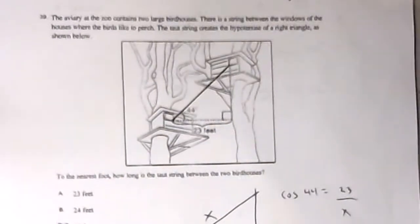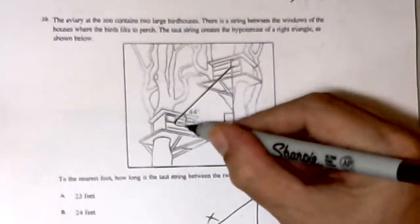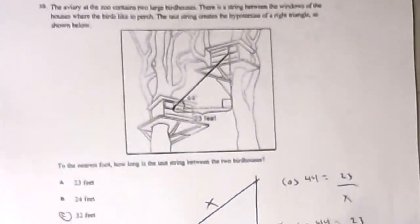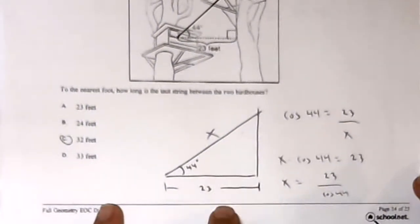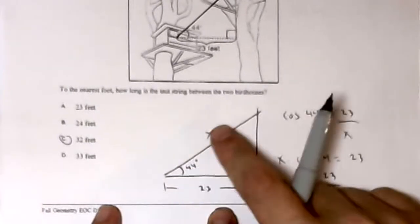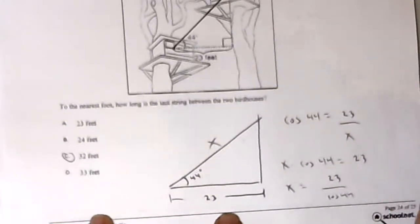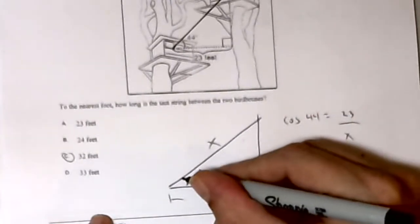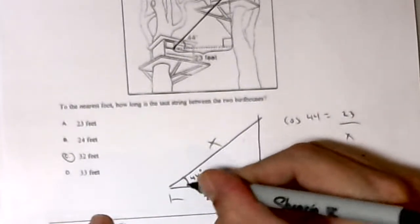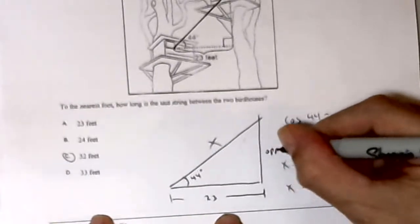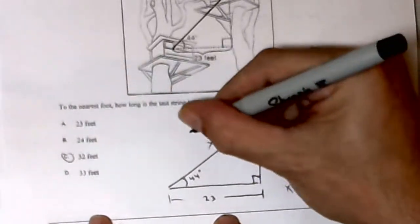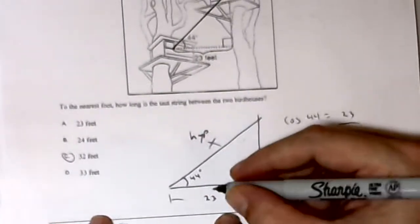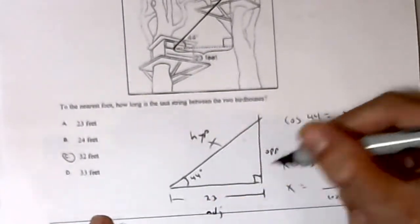The aviary at the zoo contains two birdhouses. Here's two birdhouses. I've redrawn this triangle. There's a string between them. So it looks like this: 23, 44, X. It wants to know how long the string is. What I write: across from the angle named or given is our opposite. Our hypotenuse is always across from the right angle, and then the adjacent side is here.